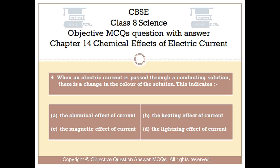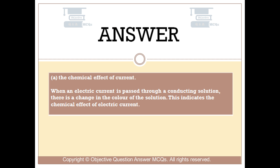The right answer is Option A — the chemical effect of current. When an electric current is passed through a conducting solution, there is a change in the color of the solution. This indicates the chemical effect of electric current.